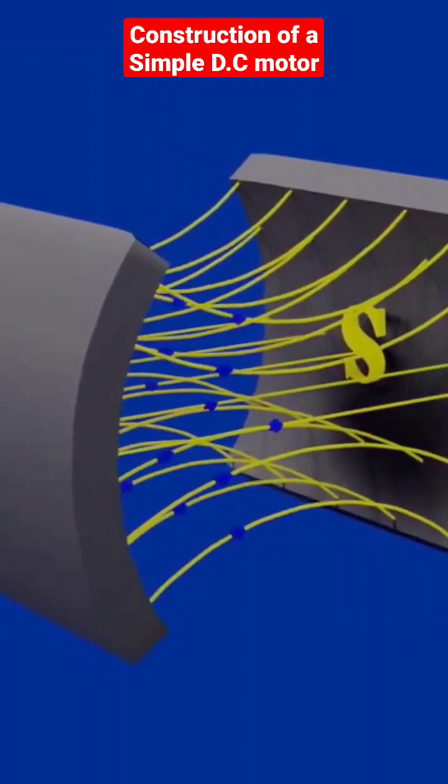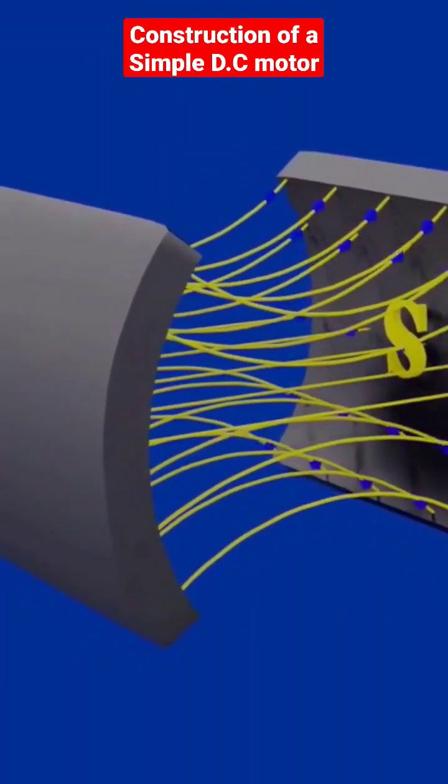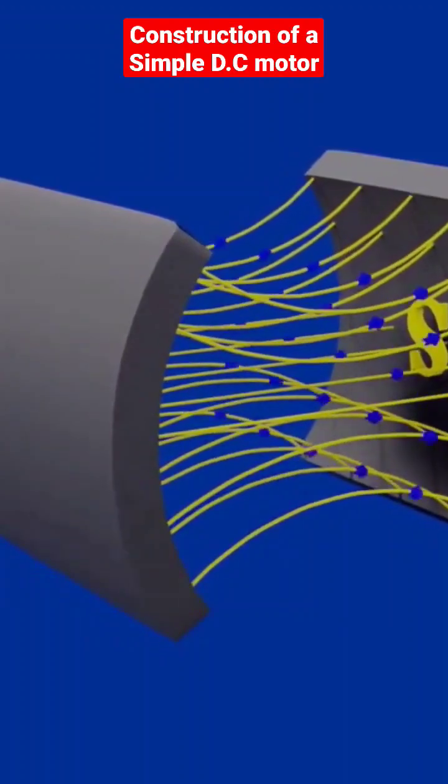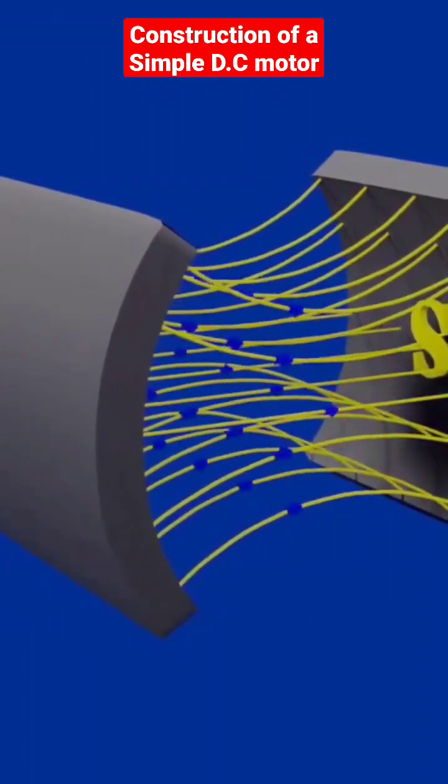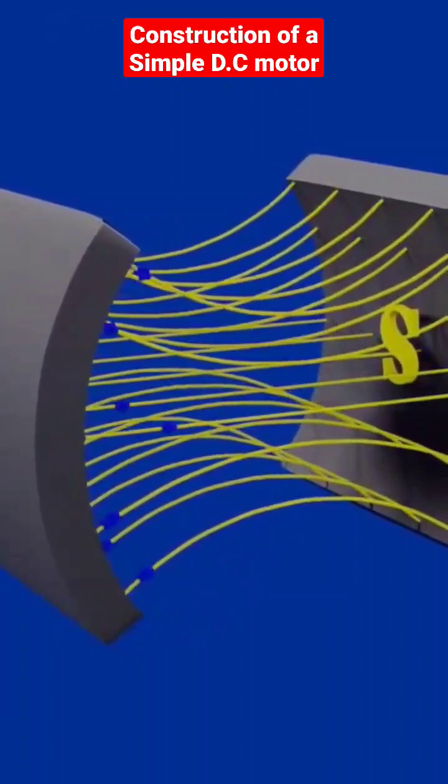Radial magnetic field actually provides higher value of torque to the rectangular coil for the efficient rotation of the armature, which is the rotating part of a DC motor. Armature is placed between a radial magnetic field.